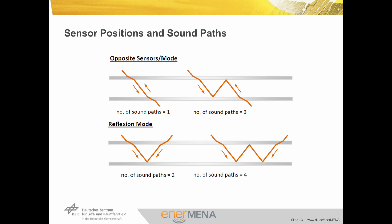Therefore, the reflection mode with even numbers of sound paths — both sensors on one side — is often preferred. The choice of the exact number of sound paths is a trade-off between the measurement uncertainty, which decreases with the number of sound paths, and the signal strength, which also decreases.